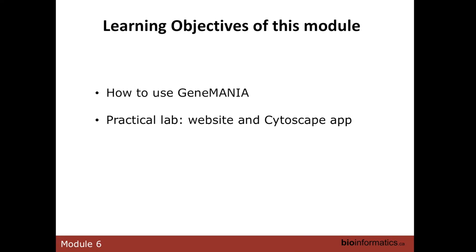We are going to use a software called GeneMania as our functional prediction tool. This tool was developed a few years ago by Craig Morris in collaboration with Gary Bader, and it is still maintained in the Bader lab at the Donnelly Center. These slides are just a summary — I don't want to be redundant with the lecture you viewed, but some concepts may be a little complicated, so I wanted to review them and show examples as we use GeneMania in our projects.